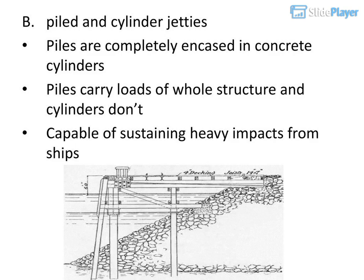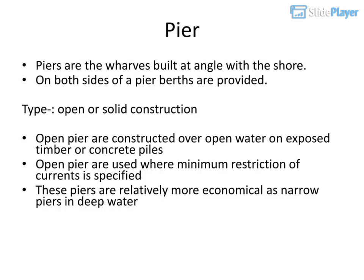Piled cylinder jetties: Piles are completely encased in concrete cylinders. The piles carry loads of the whole structure while the cylinders do not. They are capable of sustaining heavy impacts from ships. Piers are the wharves built at an angle with the shore, with berths provided on both sides. Types: open or solid construction. Open piers are constructed over open water on exposed timber or concrete piles, used where minimum restriction of currents is specified, and are relatively economical as narrow piers in deep water.